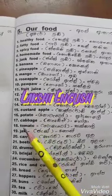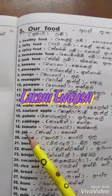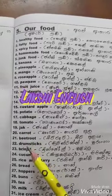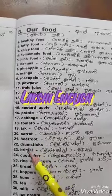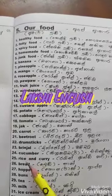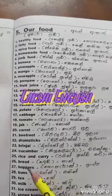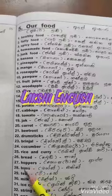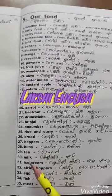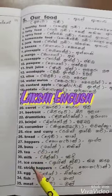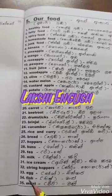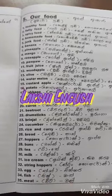Cabbage, Tomato, Jackfruit, Carrot, Beetroot, Drumsticks, Brinjal, Cucumber, Rice and Curry, Bread, Hoppers, Buns, Tea, Milk, Ice Cream, String Hoppers, Egg, Fish, Meat.